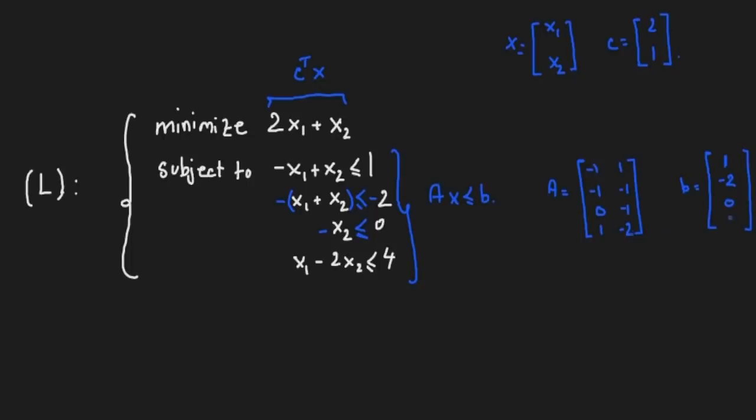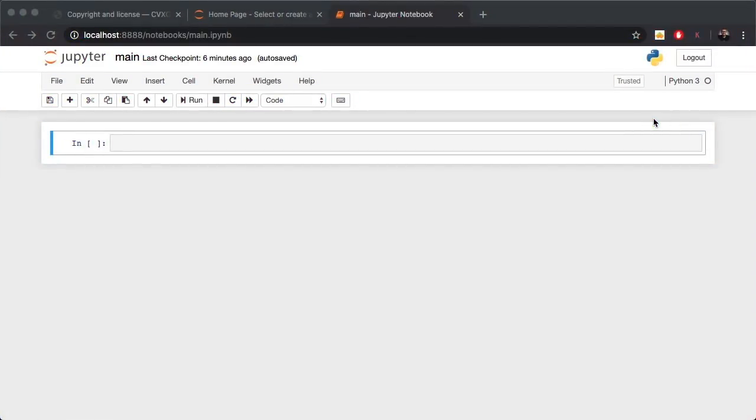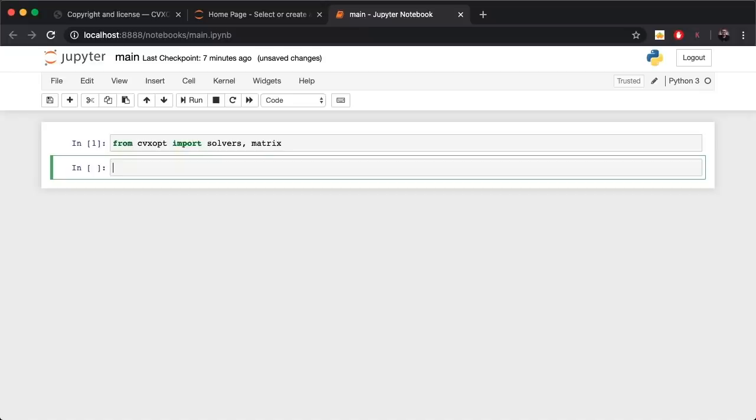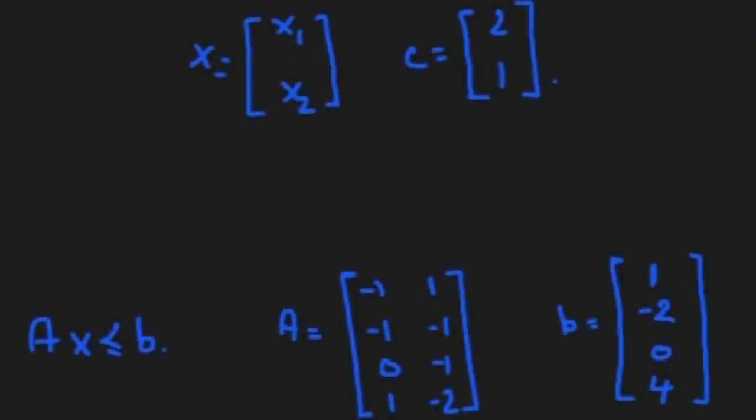So that's it, we've got our A matrix, our b vector and our c vector. We could then use Jupyter, which I have opened on my Google Chrome, to solve this problem. The first thing you'd want to do is from your cvxopt package import solvers and matrix because we'll be using that.